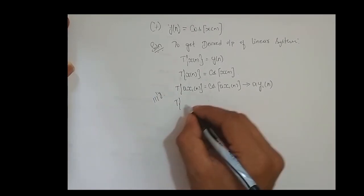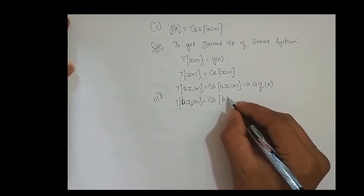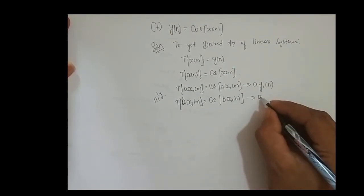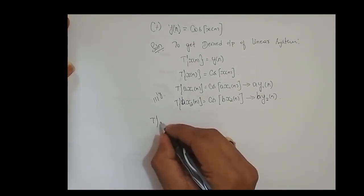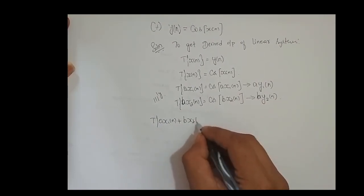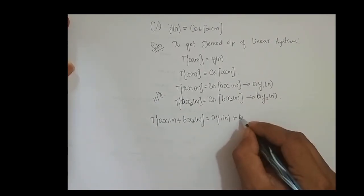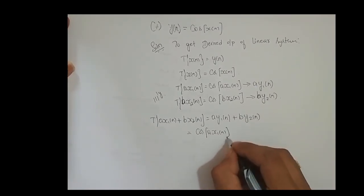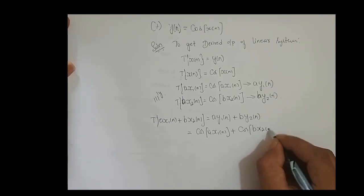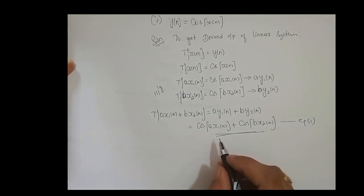Similarly, one more scaled input: transformation of b times x2 of n, and the scaled output is b times y2 of n. Now we shall combine it: transformation of a times x1 of n plus b times x2 of n is equal to the output a times y1 of n plus b times y2 of n. That is, cos of a times x1 of n plus cos of b times x2 of n. This is Equation 1, and this is the desired output of a linear system.